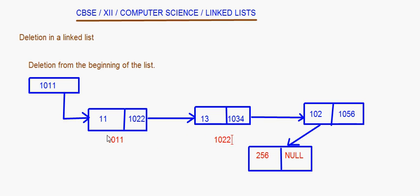Here I have 13 and the next pointer goes further. This is the last node of the list. The address of the first node is 1011, the second is 1022, the third is 1034, and the fourth is 1056. Since we have to do deletion from the beginning, we are to delete the node which contains the information 'living'.